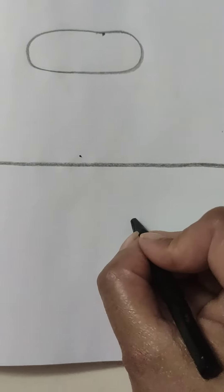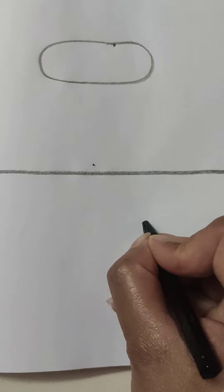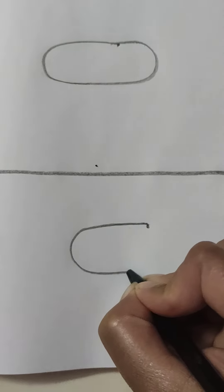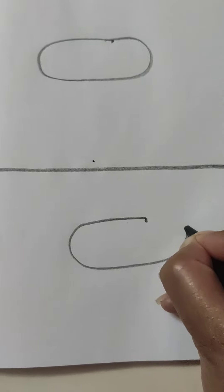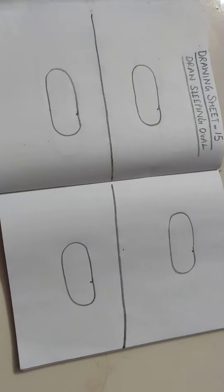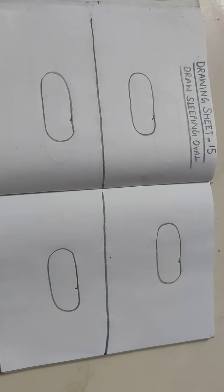Alright. So, like this, you are going to make sleeping oval in your drawing notebook with black crayon. So, like this, you will make four sleeping ovals.